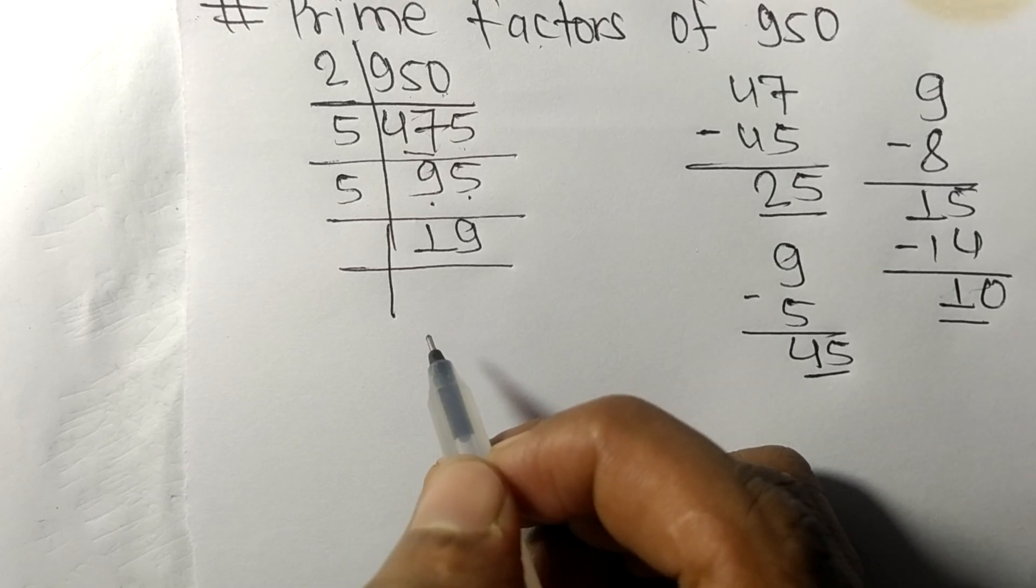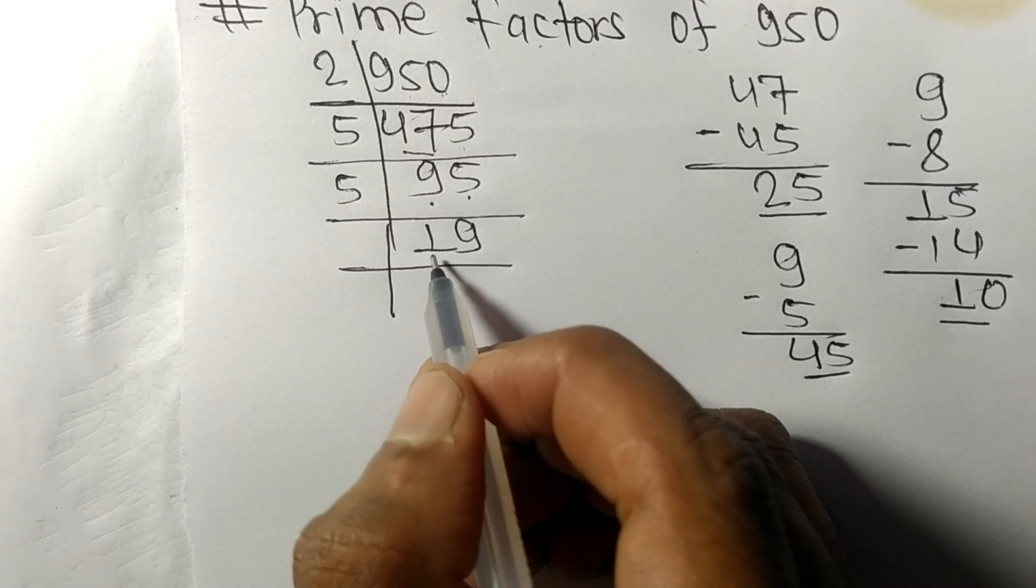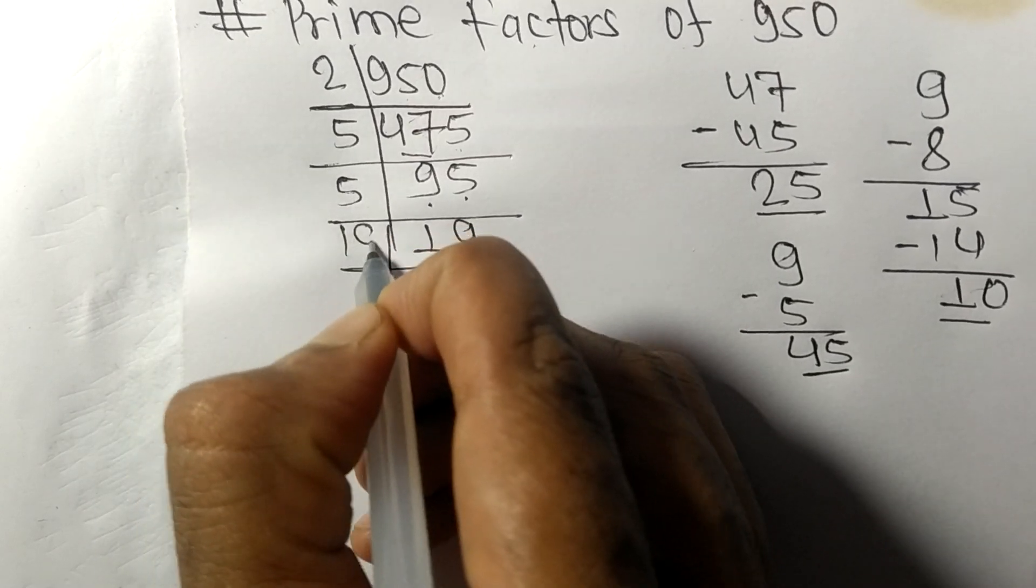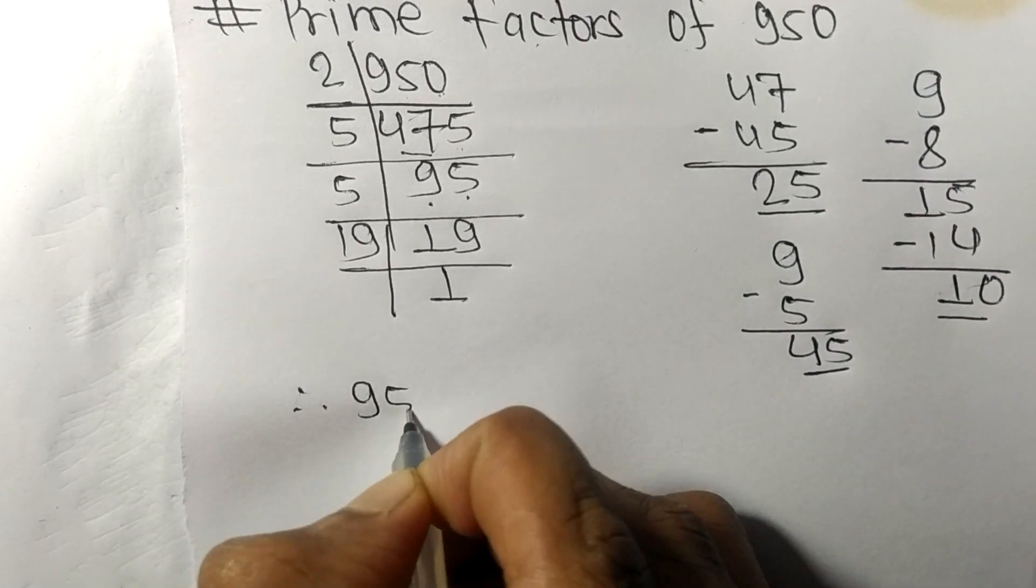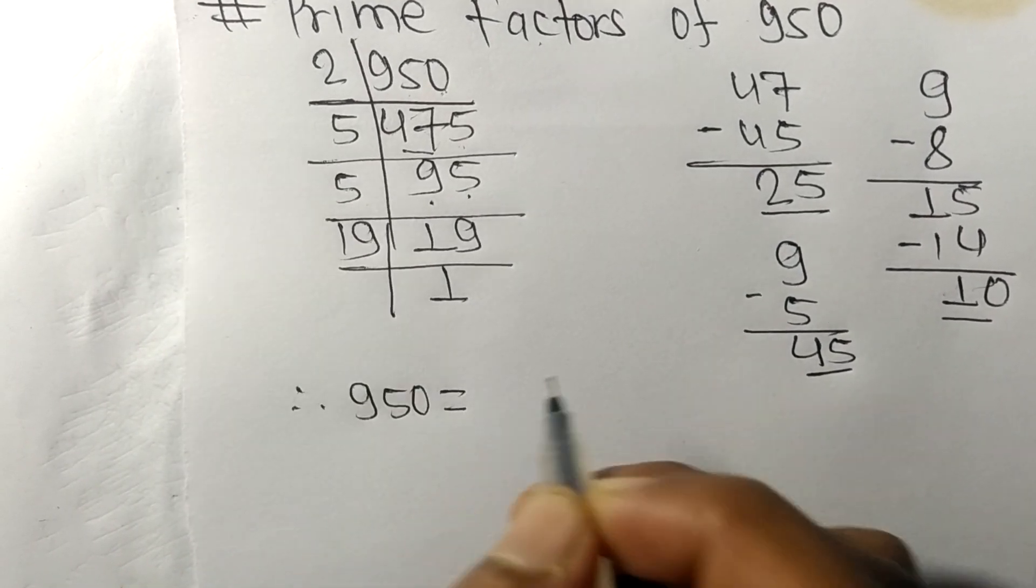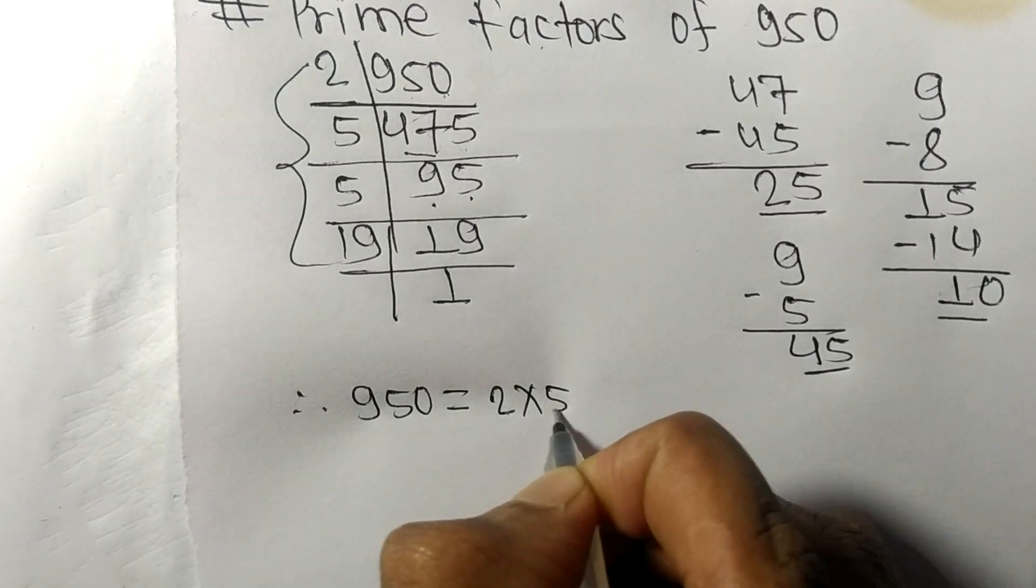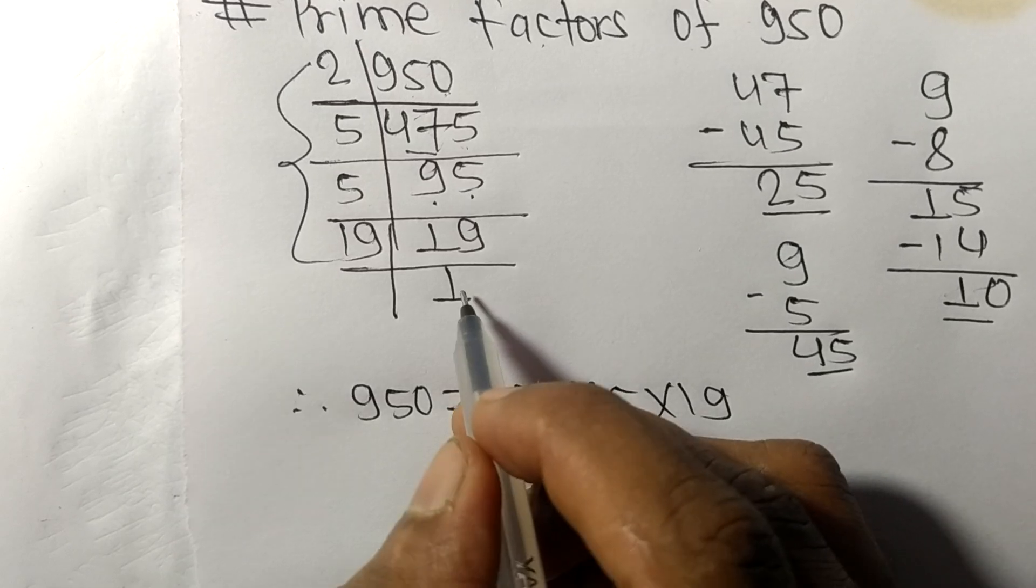So it is exactly divisible by 19 only, and on dividing we get one. Therefore, nine hundred fifty is equal to, from this side, it is two times five times five times nineteen.